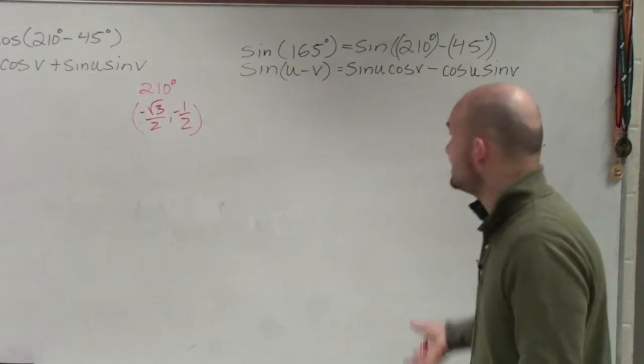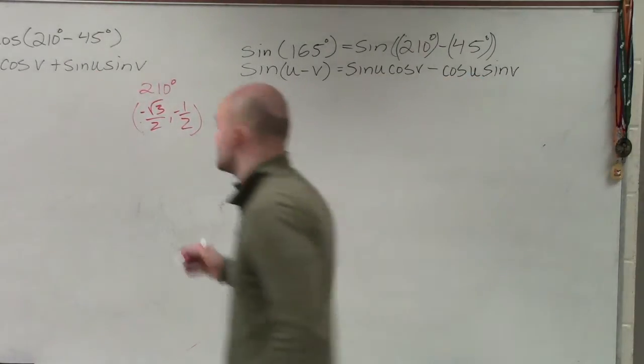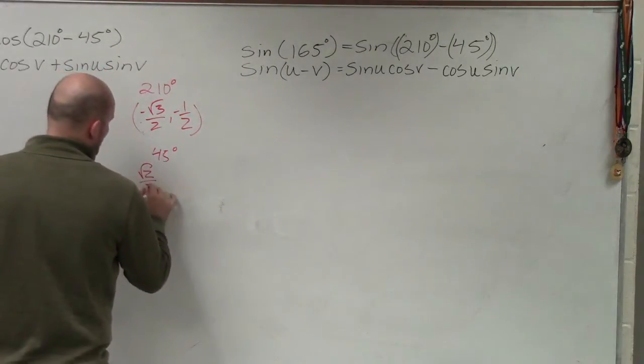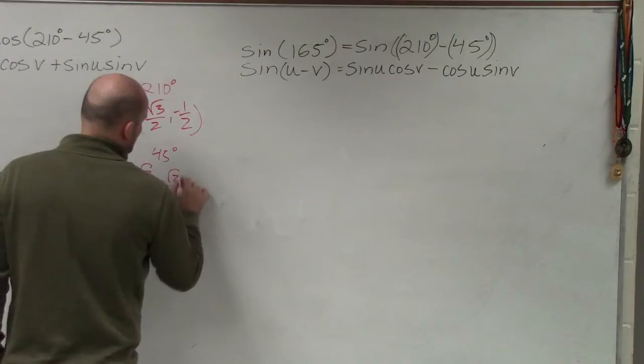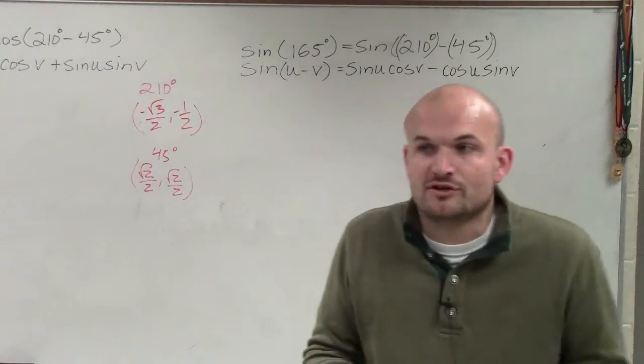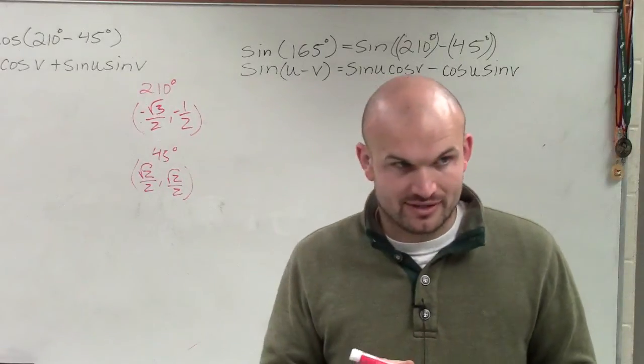Then the next thing we looked at is the coordinate point for 45 degrees. Now, if TJ has this written down, he would know that that would be square root of 2 over 2, comma, square root of 2 over 2. Notice, I am finding the coordinate point for 45 degrees, not negative 45 degrees.